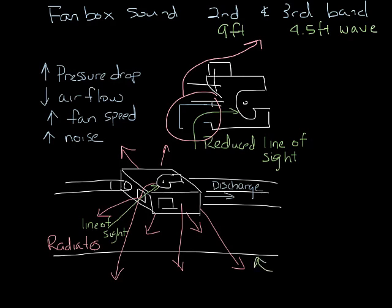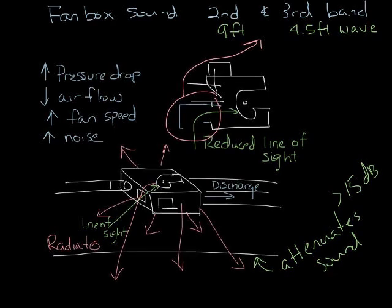Like with the single duct box, the ceiling will attenuate a lot of the fan box radiated sound, but if you have an application that has no ceiling, be sure to select your boxes without a ceiling, because the ceiling can give you 16 to over 35 dB reduction, and if you're not going to have a ceiling, you'll want to know this when you do your sound calculations. You can do this in the team selection software.